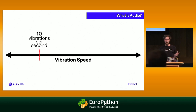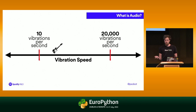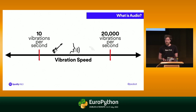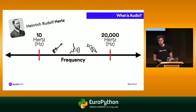Our ears detect between about 10 vibrations per second all the way through to 20,000 vibrations per second. In this range, there's a whole bunch of different sounds. Towards the lower end of the range, you'll have sounds like bass guitars, rumbles, and car engines — those have fewer vibrations per second. In the middle, you'll have sounds like the human voice and musical instruments. Towards the top, you have sounds like birds chirping and other high-pitched sounds. Higher pitches mean higher frequencies, notated in a unit called hertz, often written as Hz — named after the German physicist Heinrich Rudolf Hertz.